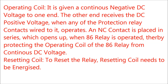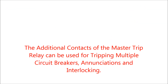Resetting coil: To reset the relay, the resetting coil needs to be energized. It is done by a push button in series with the resetting coil. If we press the push button, then a DC pulse will be given to the resetting coil, which will energize it and lead to the reset of the 86 relay. The additional contacts of the master trip relay can also be used for tripping multiple circuit breakers, enunciation, and interlocking of the circuit breaker.